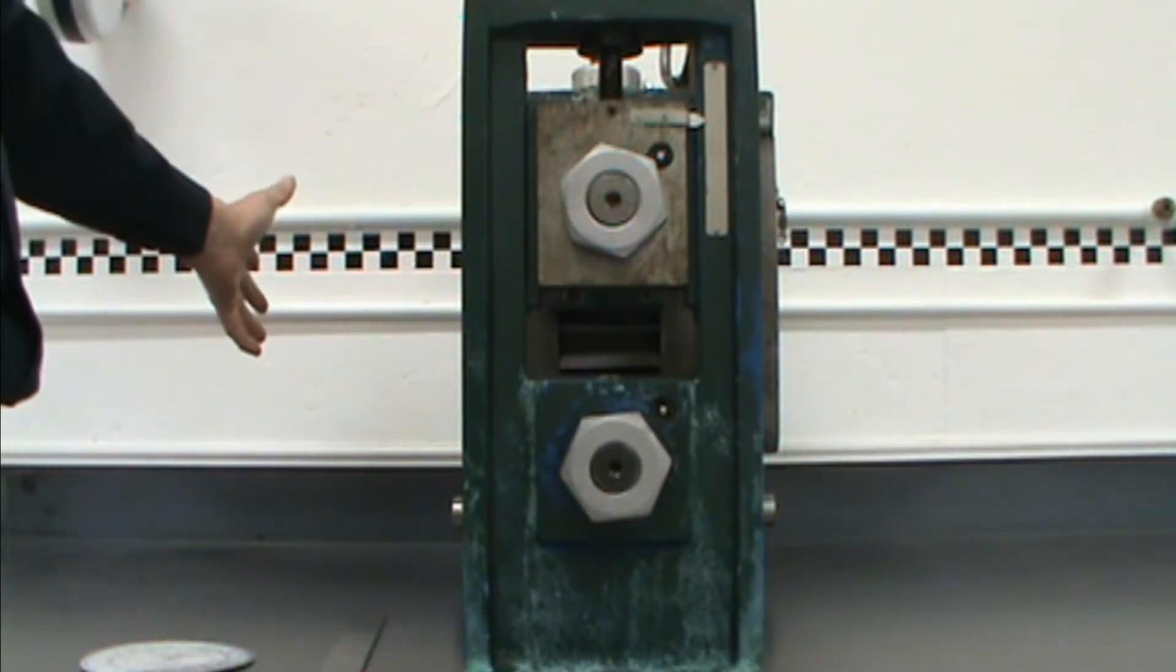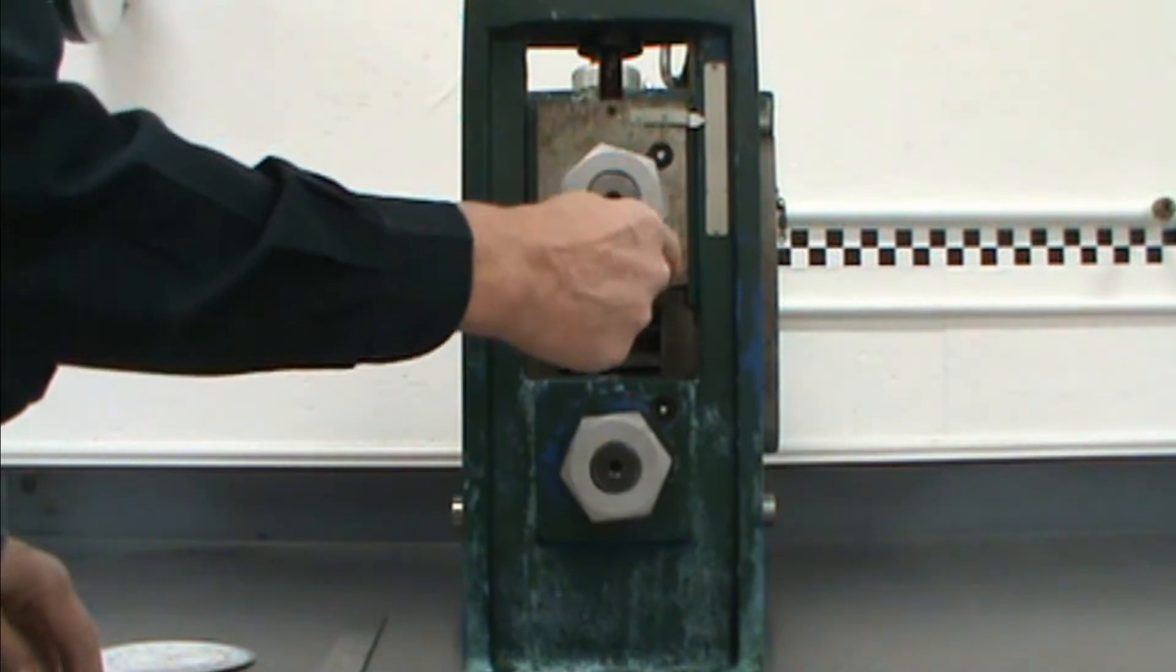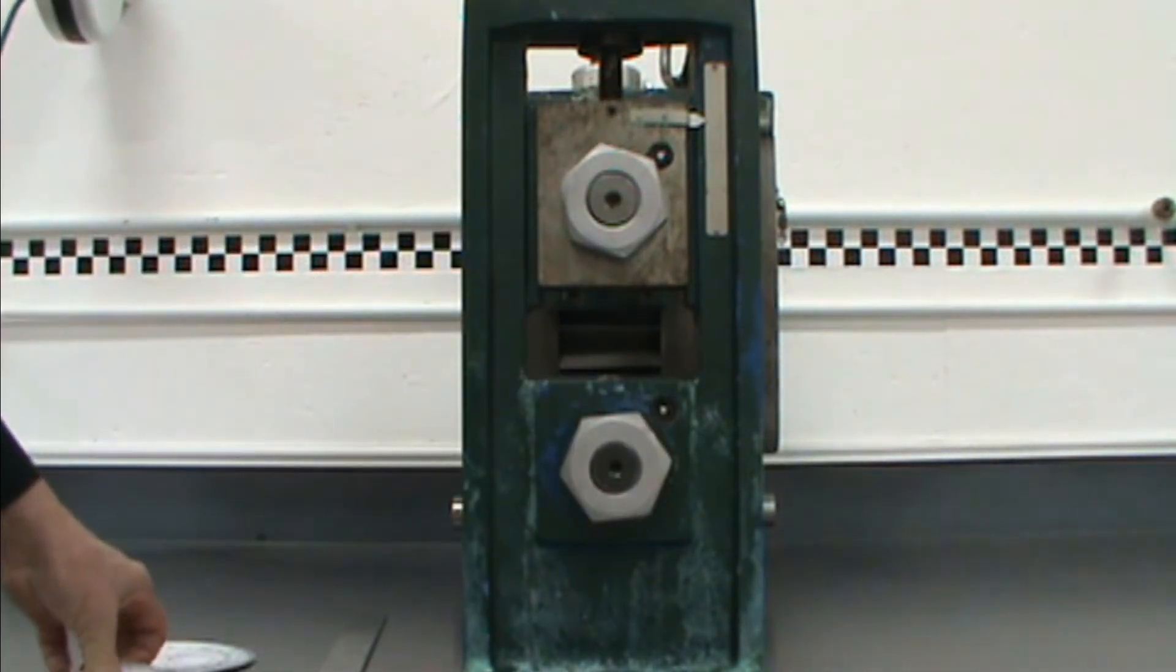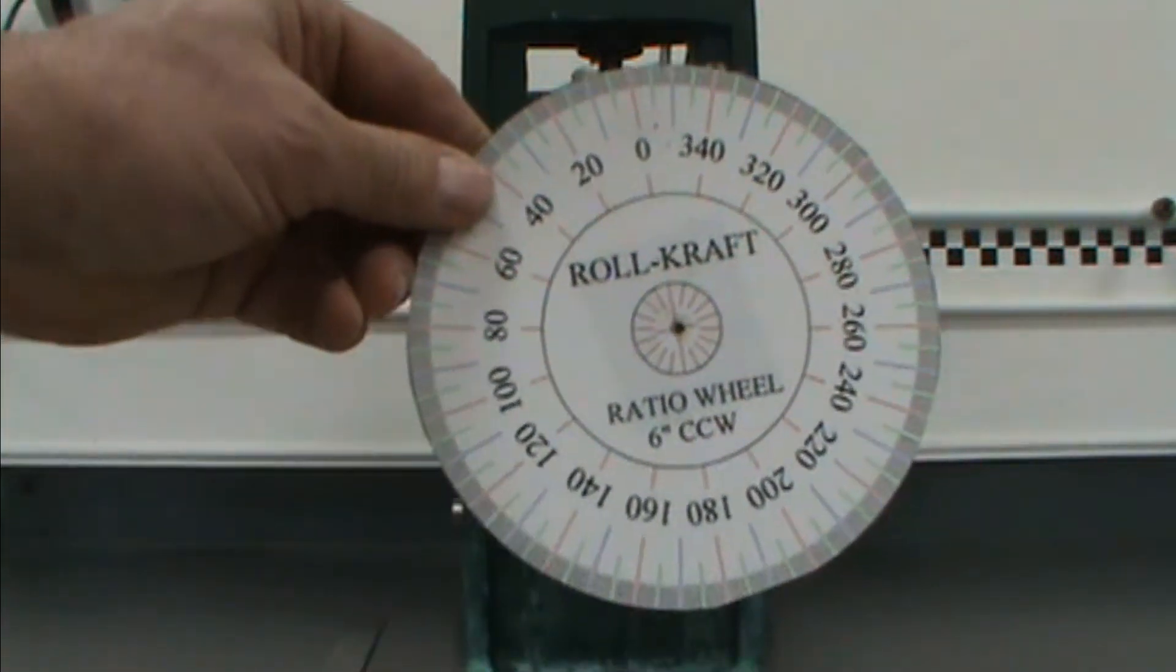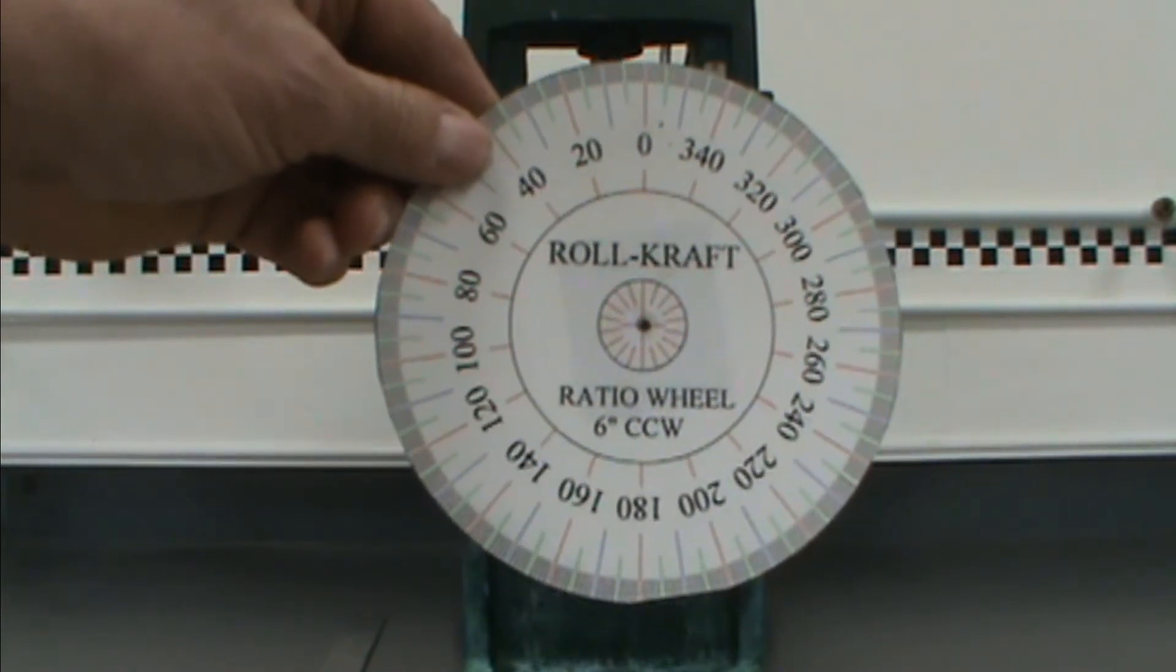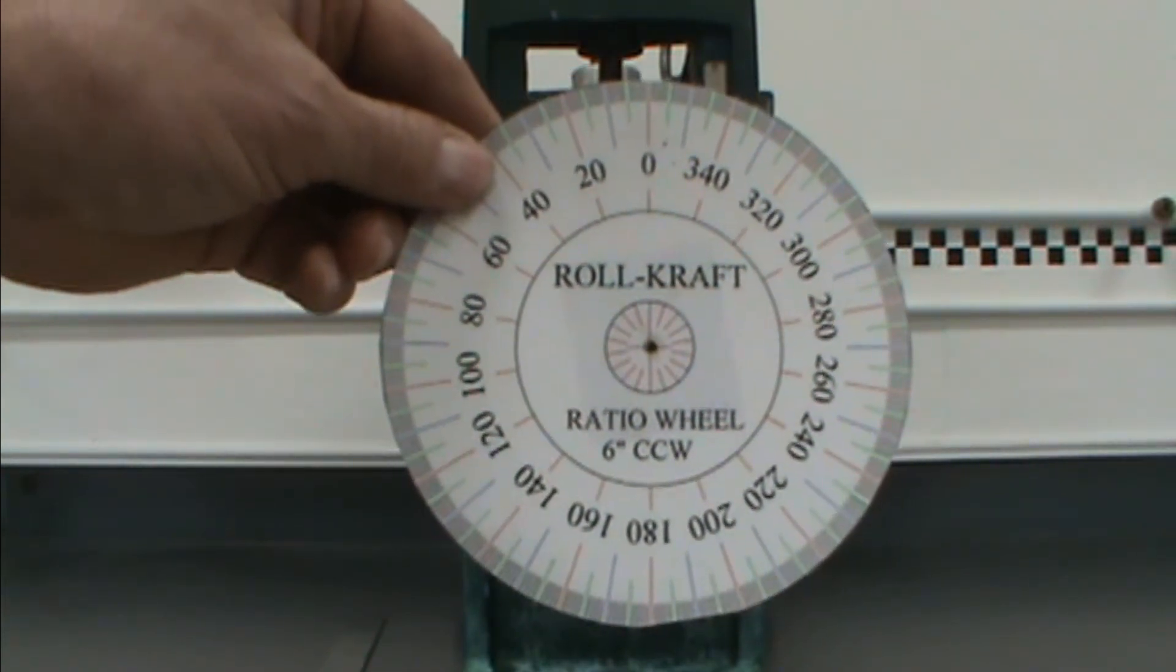In the absence of that, we can simply see what the relationship of the rotation of the top shaft is to the bottom. And we do this with what we call a ratio wheel. Follow the link at the bottom of your screen and print off one of these ratio wheels that will fit the size of your mill.